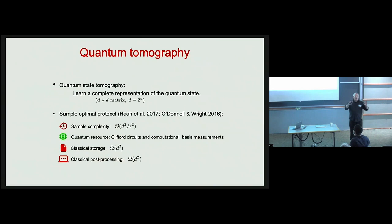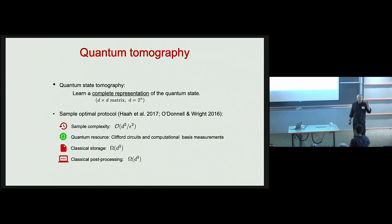It's possible in principle to have a complete classical description of a many-qubit quantum state, but it's not at all practical to do so because that description involves an exponentially large amount of classical data. It takes an exponential number of experiments to learn that description and an exponential amount of classical processing to use that description to predict properties of interest of the state.